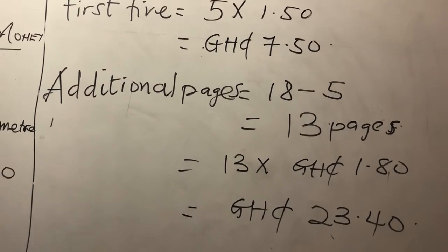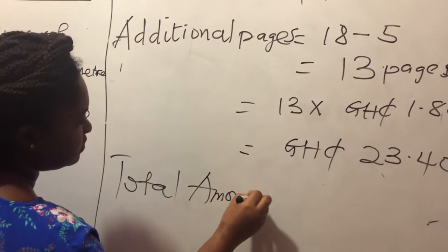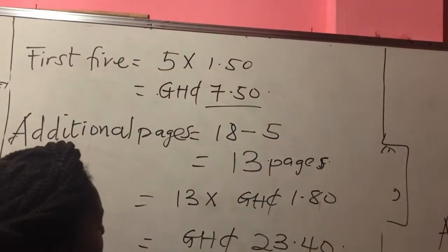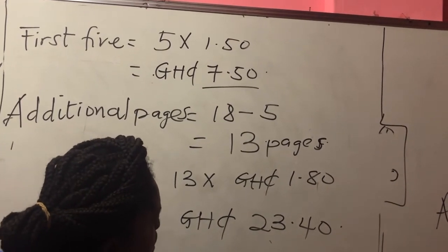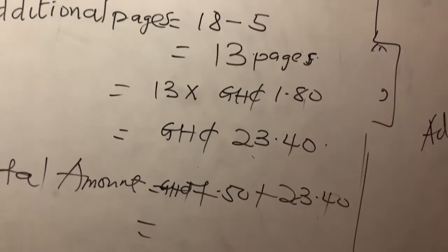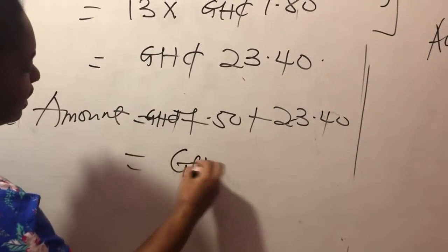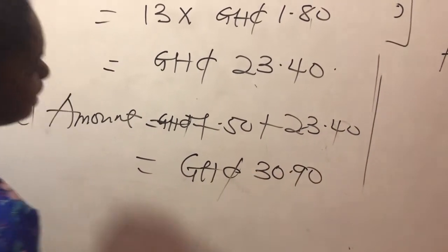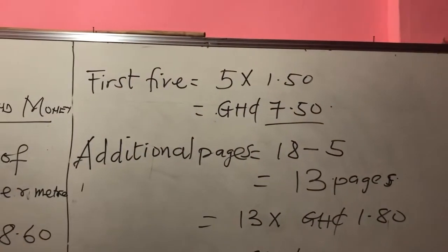The question is: I have to add the total. So total amount charged = 7 cedis 50 pesewas for the first five, plus 23 cedis 40 pesewas for the additional. So the total amount is 30 cedis 90 pesewas. You see how beautiful the question is?